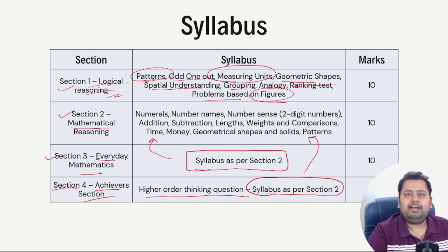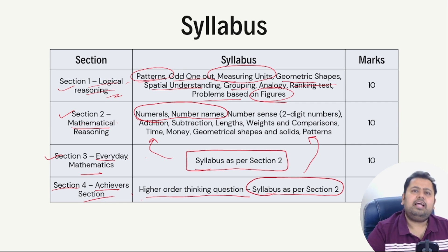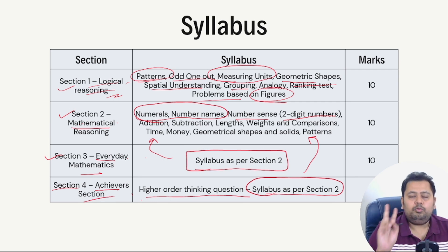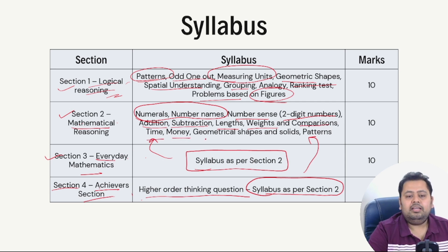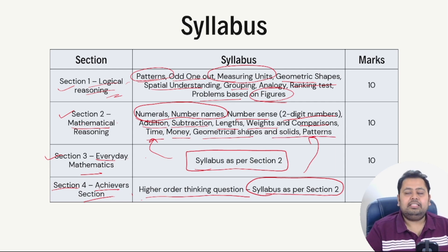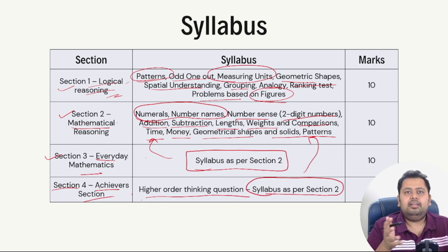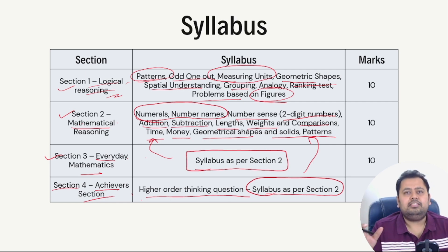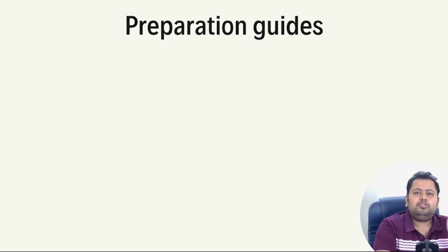For Sections 2, 3, and 4, the syllabus is the same. Topics include: numerals and number names, counting, simple addition and subtraction, number sense with two-digit numbers, lengths, weights and comparisons, time, money, geometrical shapes and solids, and patterns. Conceptual clarity from the textbook is important, but solving many practice questions is equally essential to gain depth.